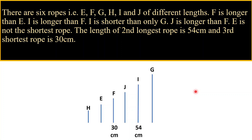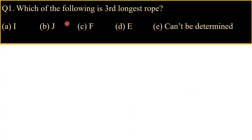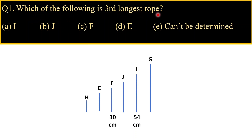We have solved the reference question. Now let's see the questions based on this information. The first question: which of the following is the third longest rope? Looking at the arrangement — G is the first longest, I is second longest, and J is the third longest rope. So our answer is option B, which is J.